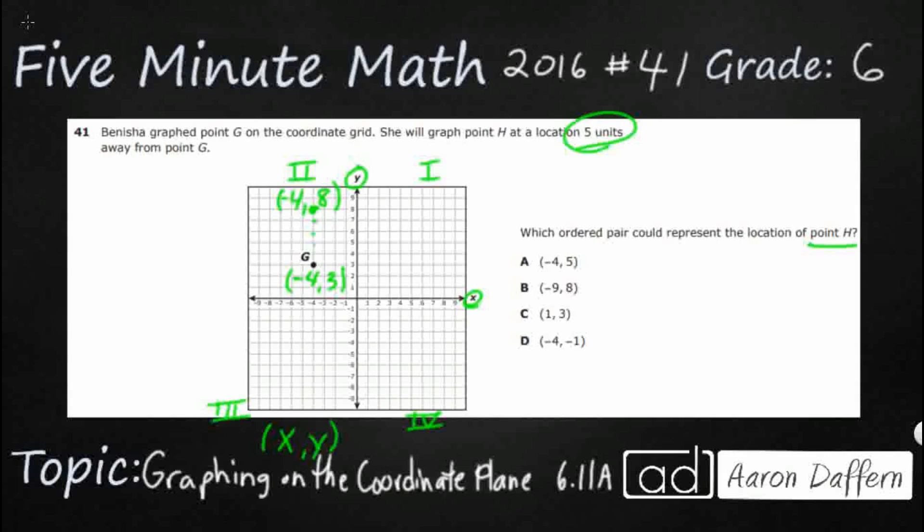Alright, let's see if we can go 5 to the left, 1, 2, 3, 4, 5. We're almost getting off of our graph here. So our X coordinate is the one that changed. Our negative 4 is going to change to negative 9, because we went over 5 to the left, but we didn't move up or down.